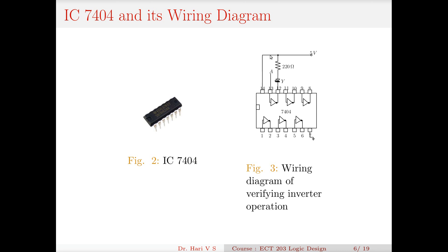Pin 7 is ground and pin 14 is VCC, usually connected to 5V in your lab. Input A is given to pin 13. If A is connected to logic high (5V) it becomes 1; if A is connected to ground, it becomes 0. To test the output I use an LED connected in a normally-on fashion. When pin 12 is low, current flows through the 200-ohm resistor and the LED glows. When pin 12 is high, no current flows and the LED does not glow.